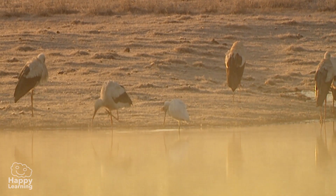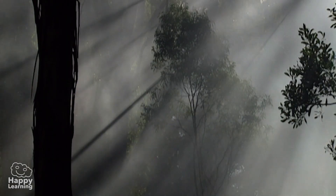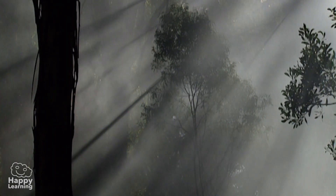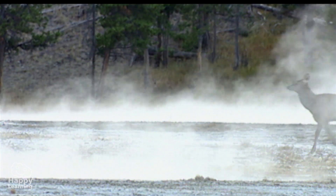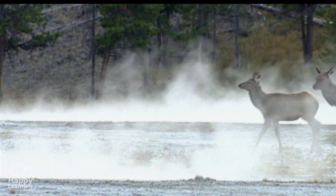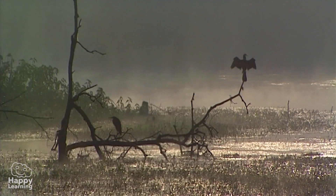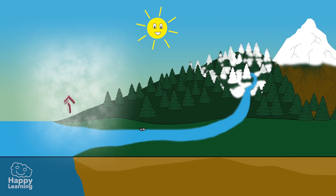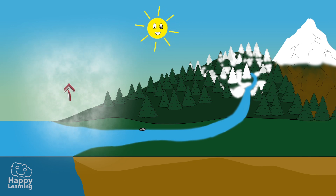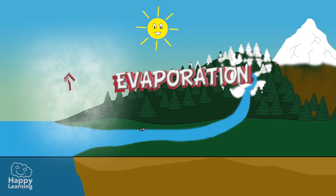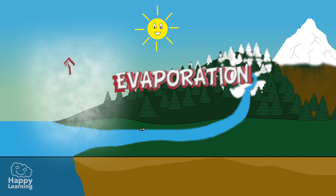Now, let's learn more about it. When the sun warms the water on the Earth's surface, it evaporates, converting itself into water vapor, or steam. And it begins its incredible journey, flying into the sky, up towards the atmosphere. This first stage of its journey is known as evaporation.